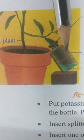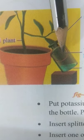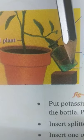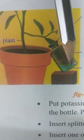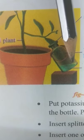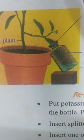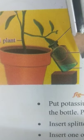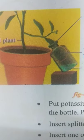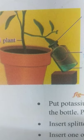Before fixing the cork to the bottle, you must keep a small piece of potassium hydroxide, or in liquid form you can keep a little amount of potassium hydroxide inside the bottle. Then leave the experiment for 2 to 3 hours under the sunlight.